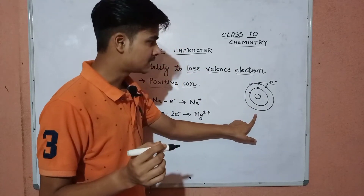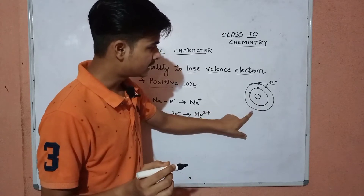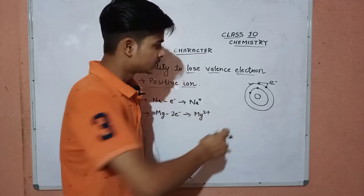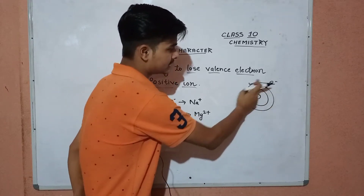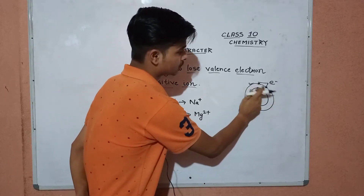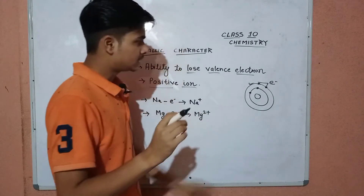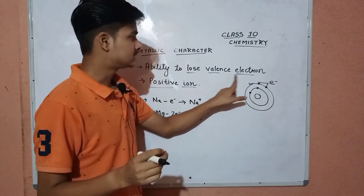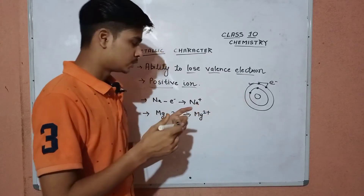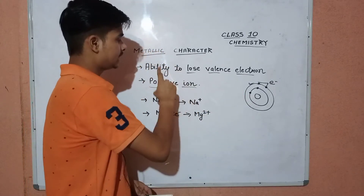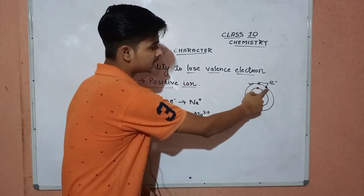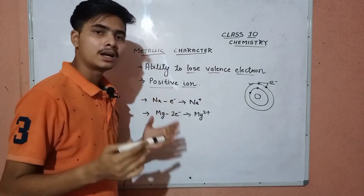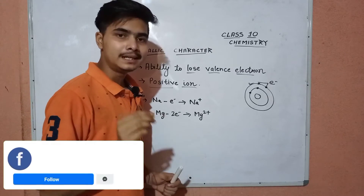Suppose this is an atom — this is the first shell, this is the second shell, and for this atom this is the last shell. The electrons which are in this last shell are called valence electrons. So those elements which have the ability to lose these electrons and form a positive ion are known as metals.